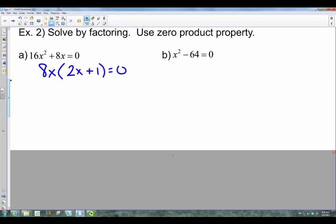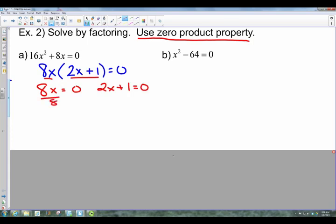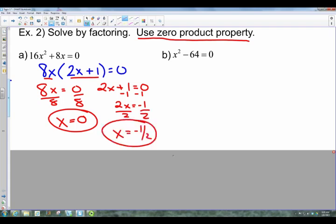Now the zero product property takes each of these two factors and sets them equal to zero. So 8x = 0 and 2x + 1 = 0. For the first one, divide by 8, and that gives you x = 0. That's your first solution. On the second one, subtract 1, so 2x = -1, then divide by 2. That gives you x = -1/2, your second solution. Because that has a 2 as a degree, you will have two solutions.